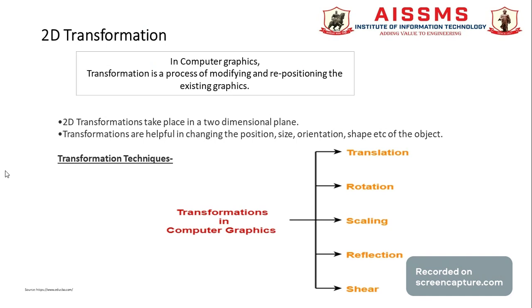Now we will discuss the different techniques for transformation. In computer graphics there are 5 techniques: translation, rotation, scaling, reflection, and shear. We will now look at the first one — translation.